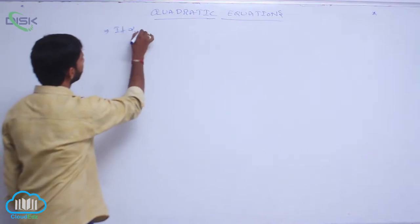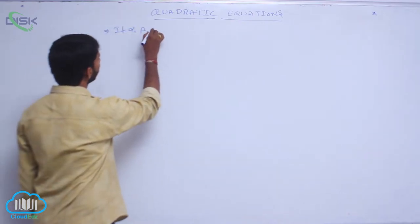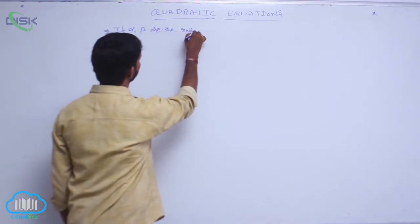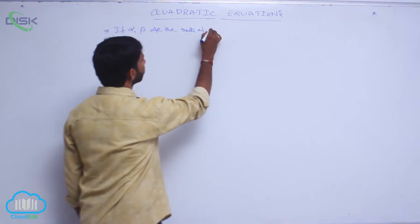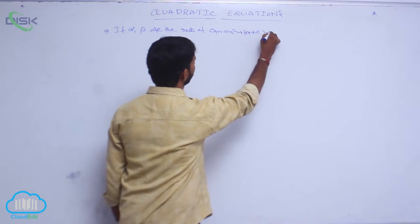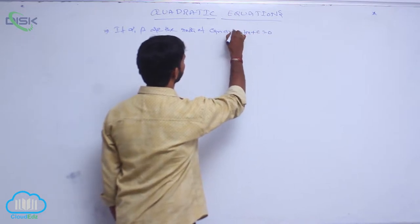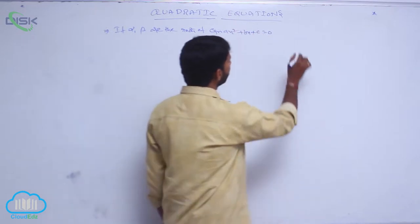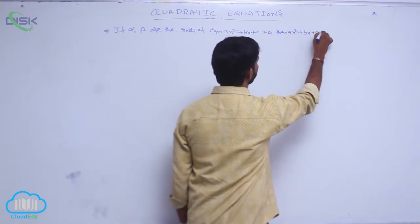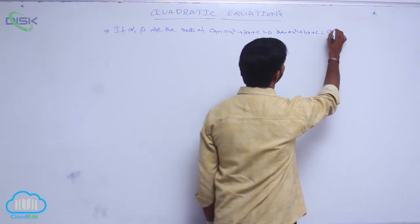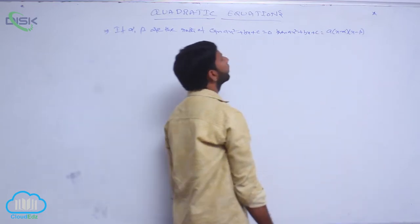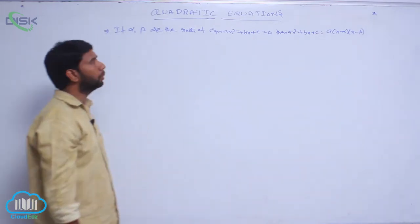If alpha, beta are the roots of the equation Ax² + Bx + C = 0, then Ax² + Bx + C is equal to A of (x − alpha) into (x − beta).